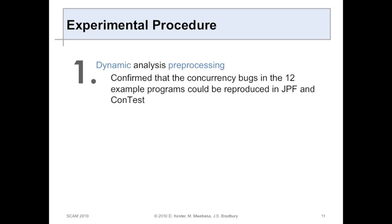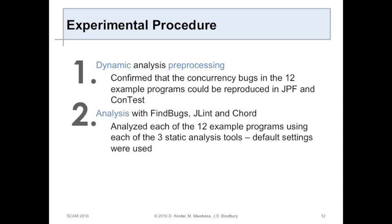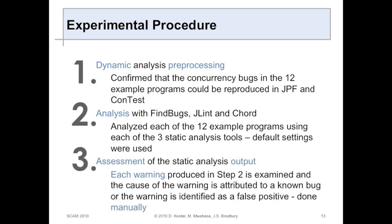The procedure we took: we first did dynamic analysis using Java Pathfinder and Qantas to make sure the bugs actually existed, and this is where we found out that one of the programs actually had a second bug - so our experiment is based on 13 bugs. Secondly, we did the static analysis using our three tools of choice, and we analyzed the twelve programs using each tool to see what the results would be. Finally, we did a manual assessment of the output to determine whether a result found was a true bug or a spurious result.